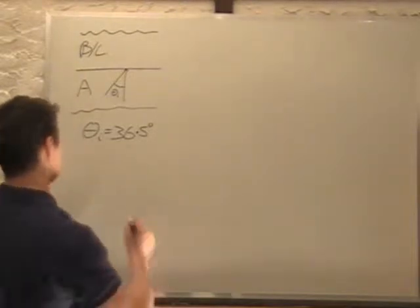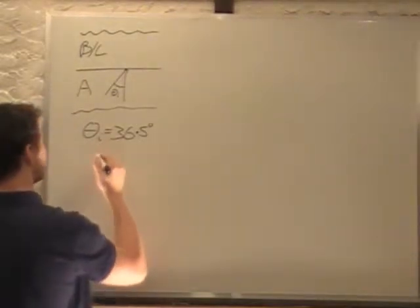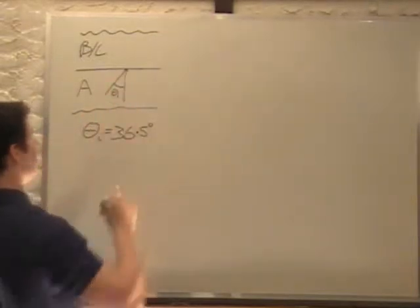This is called our critical angle, so we'll call it theta C, critical angle. It's 36.5 degrees.